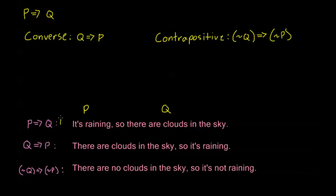This is a huge trouble area for most people just starting out with logic. It makes a lot of sense in your mind that if you have two statements and one implies the other, they should both imply each other. But that's not always the case, and this is a very important thing to understand. If I have a statement that implies something else, that doesn't mean that the implication implies my original statement. Very, very common mistake.